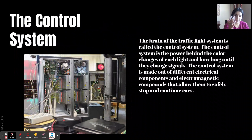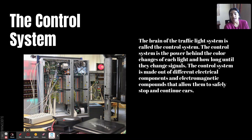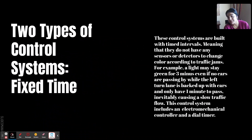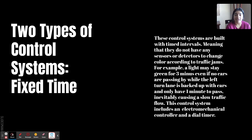This is the control system — the brain of the traffic light system. The control system is the power behind the color changes of each light and how long until they make signal changes. It is made out of different electrical components and electromagnetic compounds that allow them to safely stop and continue cars. There are two types: fixed time control systems are built with timed intervals, meaning they do not have any sensors or detectors to change color according to traffic. For example, a light may stay green for three minutes even if no cars are passing while the left turn lane is backed up. This control system includes an electromechanical controller and a dial timer, and these are being built less and less because the dynamic control system is winning due to its convenience.